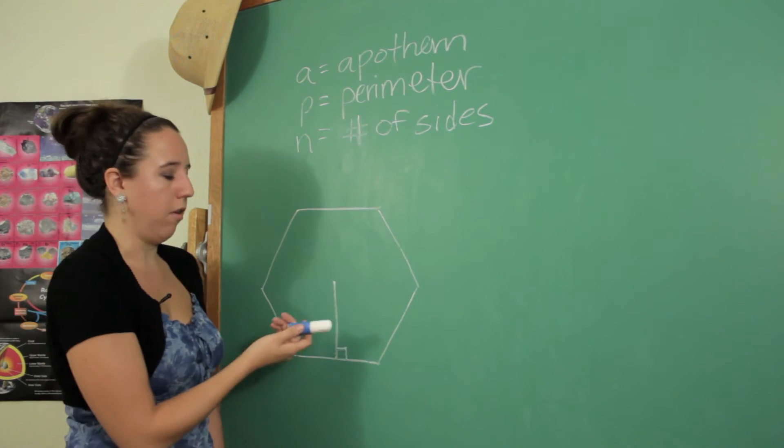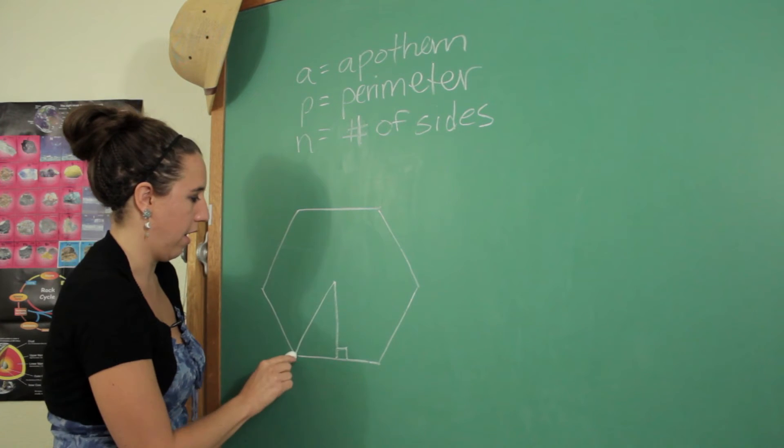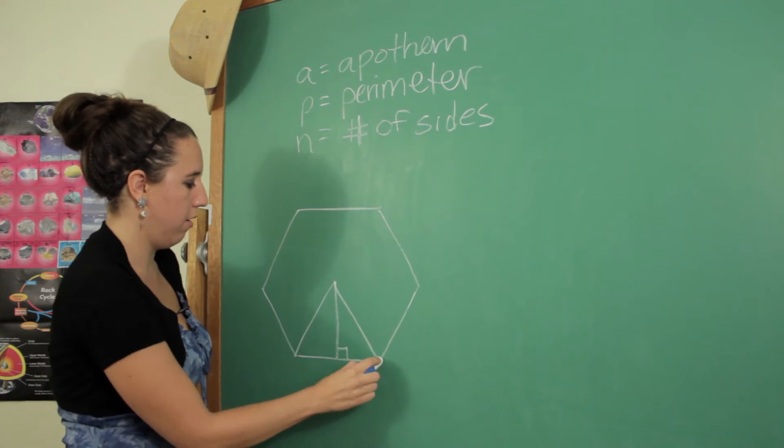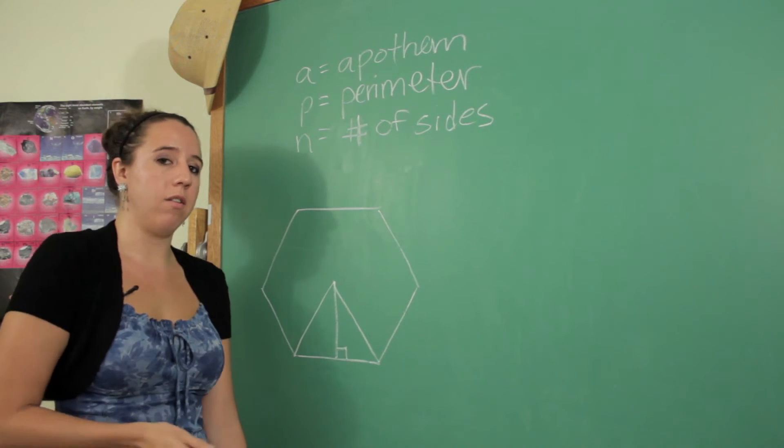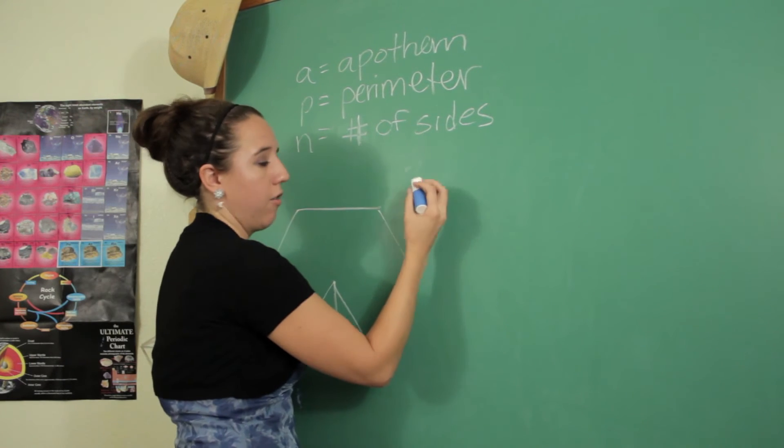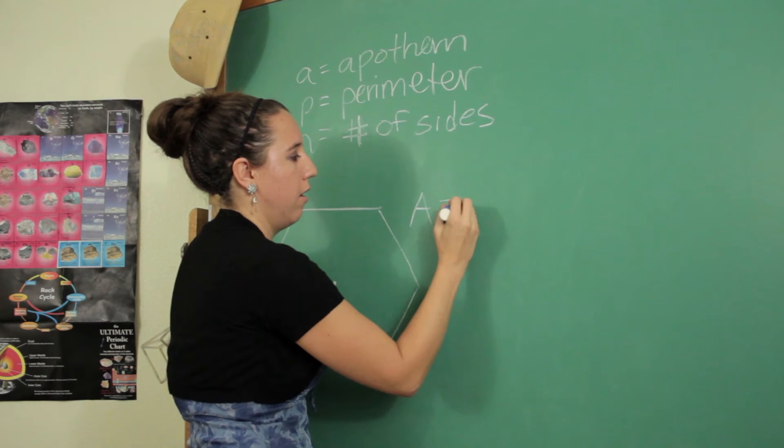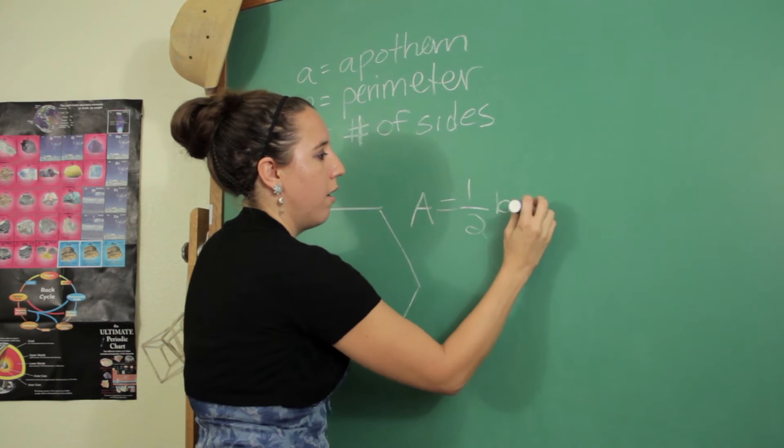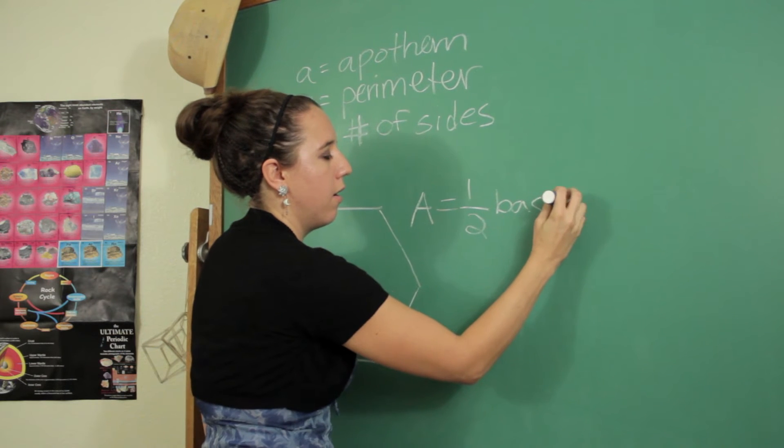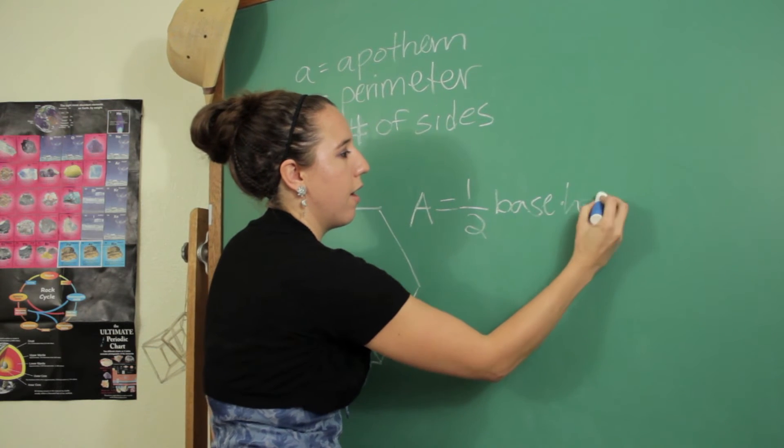So this line will enable us to turn one of the sides into a big old triangle. So most of you have learned that the area of a triangle, any triangle at all by the way, not just a right triangle, is one half the base times the height.